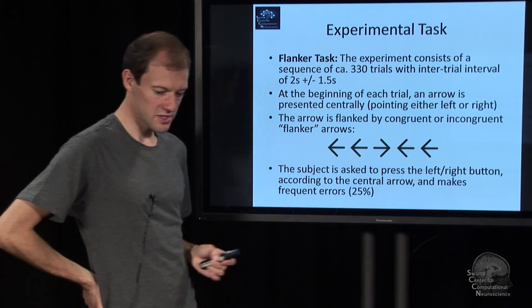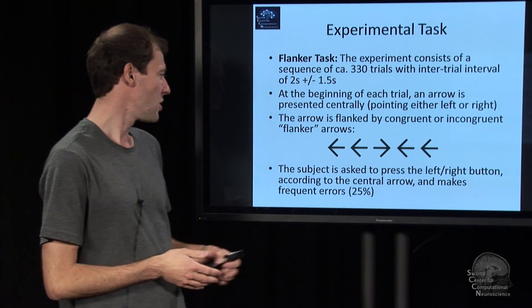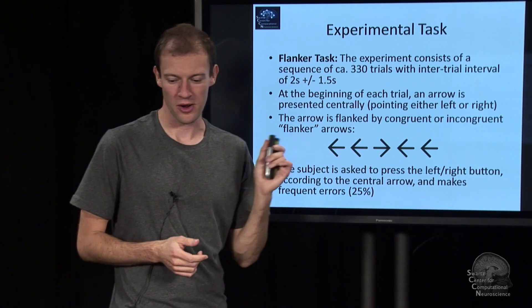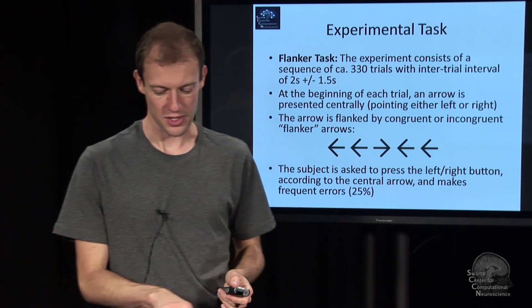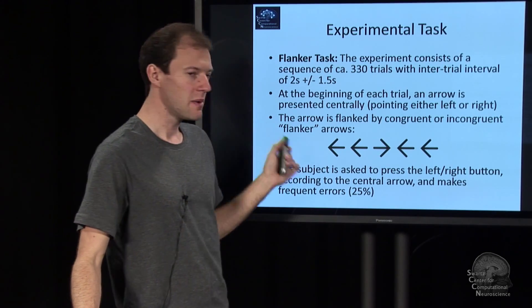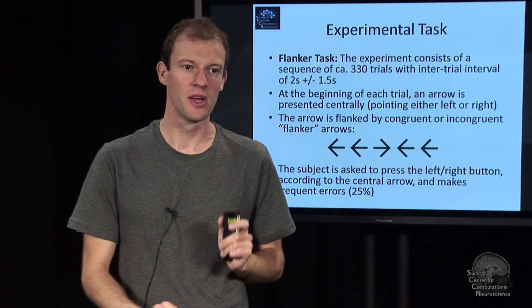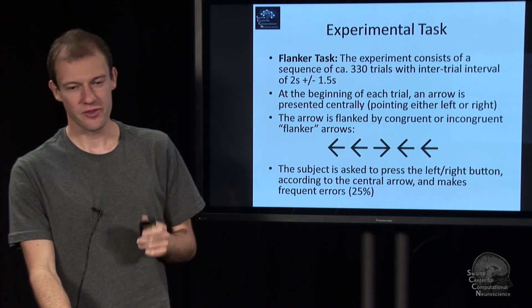And so you can basically set it up so that the person makes frequent errors depending on time pressure, up to say 25%. In this particular data that we're looking at it's actually around 25%. So what we end up with here is we have a sequence of around 300 trials, 25% is errors.